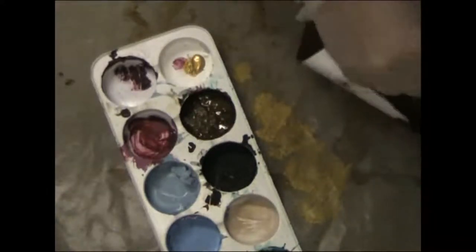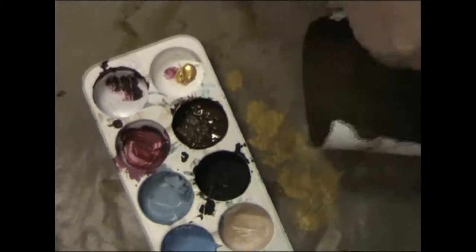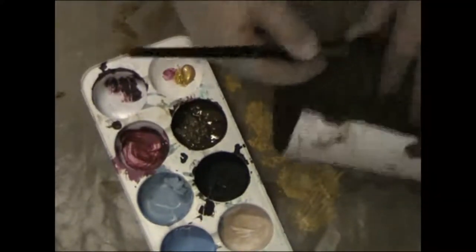Now just dabbing on some gold acrylic paint with a dry paintbrush, just randomly over the canvas. This piece of canvas is going to be used for the spine area of the cover of the album, so just drying all that at the moment.